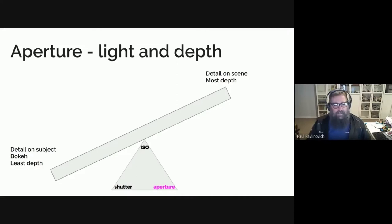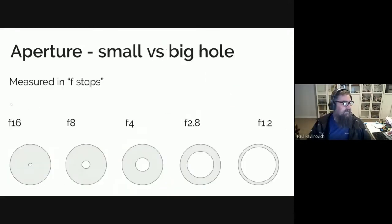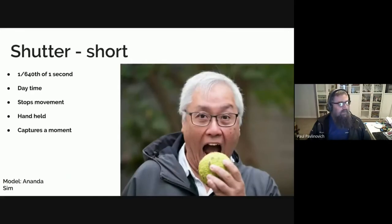With a small aperture, or a big hole, you get detail only on the subject in the image. If you remember back in that photo of Ananda — I'll just quickly flick back to it — you'll notice that his eyes are quite sharp, his glasses are sharp, and it's starting to fall off around his nose.